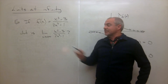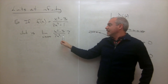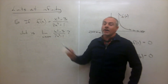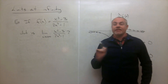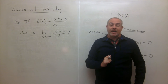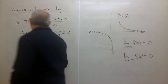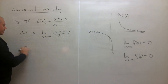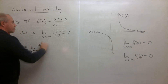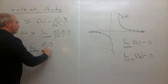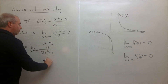Our strategy for taking limits like this is to find the highest power of x, and once I've found it, divide the top and the bottom by that highest power of x. In this case, the highest power of x is x squared. So I can say that limit is equal to the limit as x goes to infinity of x squared minus three over x squared, divided by two x squared minus one over x squared.